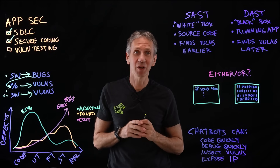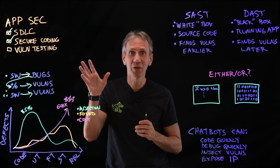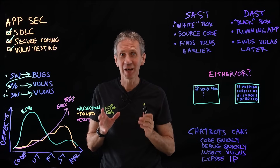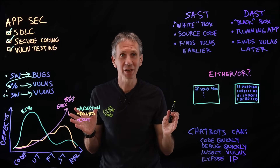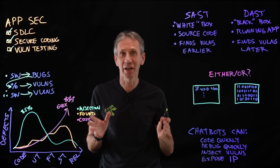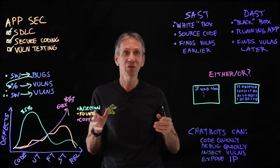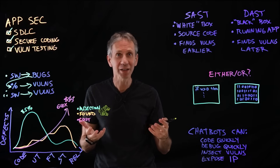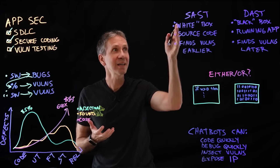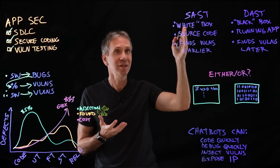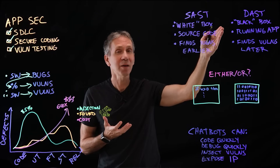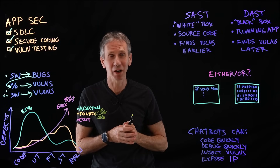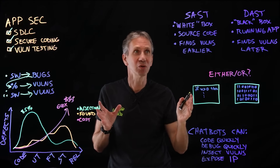Now we've covered secure coding, and we're going to take a look at vulnerability testing. We like to test for security throughout the process. One of the things I mentioned in the DevSecOps process is to use more automation — more tooling. Two major classes of those tools are static application security testing, SAST, and DAST, dynamic application security testing. What's the difference between those two?